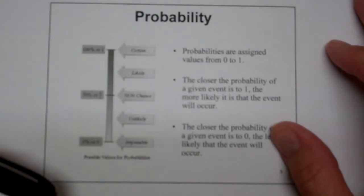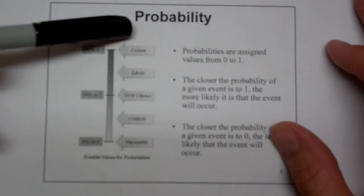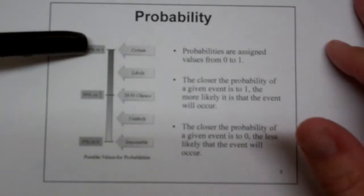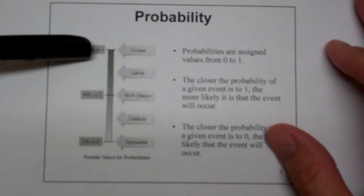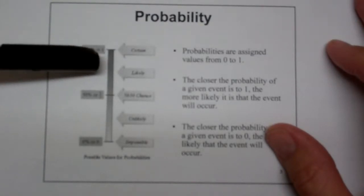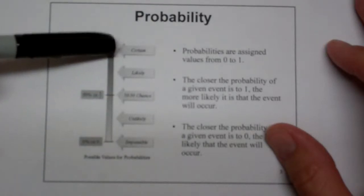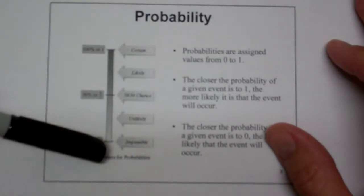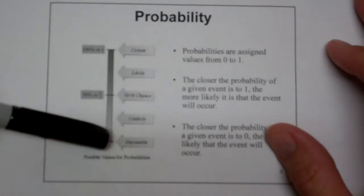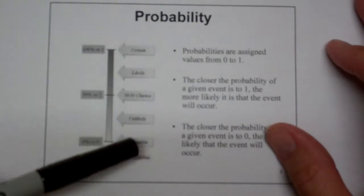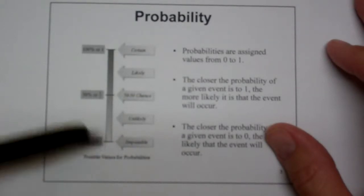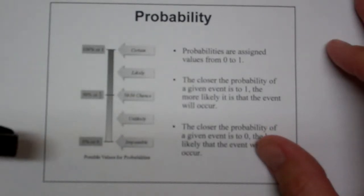All the way up to one, which is certain. If I jump up, I will come down. The probability of that is one. Every time I jump up, every time anybody jumps up, they come back down. So that's a one. Now, there's all of these different possibilities in between. So the more likely something is to happen, the closer to one it is. The more unlikely it is to happen, the closer to zero it is.